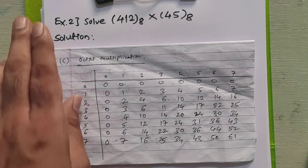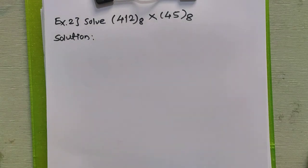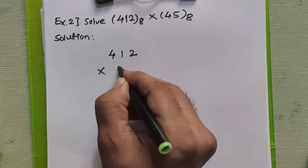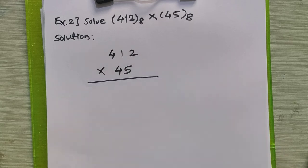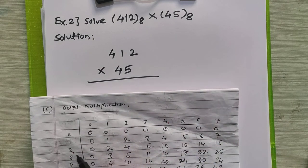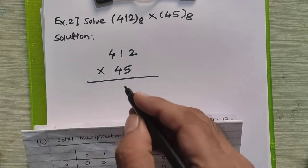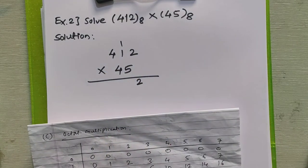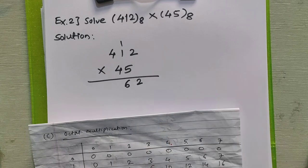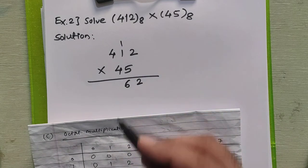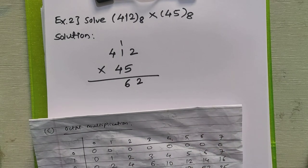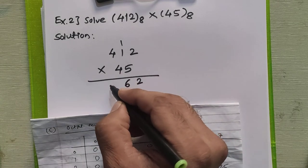Now we solve the second problem: 412 × 45 in octal. Using the multiplication table: 2×5=10 decimal = 12 octal, so write 2 and carry 1. Then 5×1=5, plus carry 1 is 6 — valid, write 6 directly. Then 5×4=20 decimal, which in octal is 24. So we write 24 here.